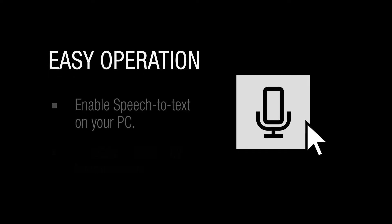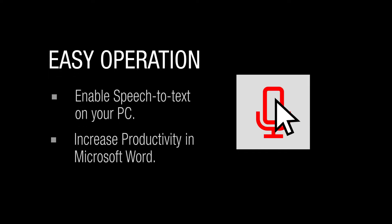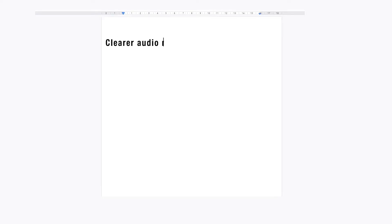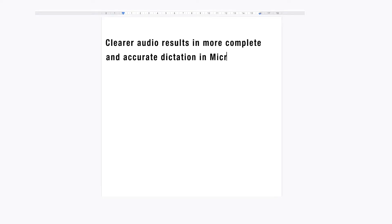Simply enable speech-to-text on your PC, press the microphone symbol and speak. Clearer audio results in more complete and accurate dictation in Microsoft Word.